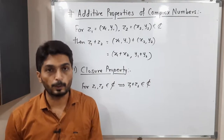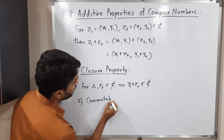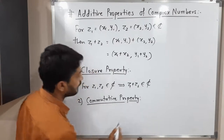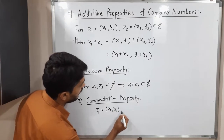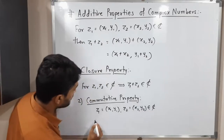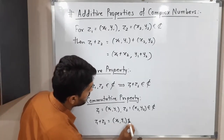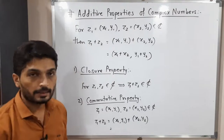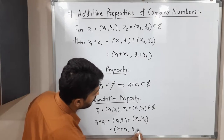The second property is the commutative property. For that we need two complex numbers: Z1 = (X1, Y1) and Z2 = (X2, Y2). Consider Z1 plus Z2, which equals (X1, Y1) plus (X2, Y2). By component-wise addition, this gives (X1 + X2, Y1 + Y2).